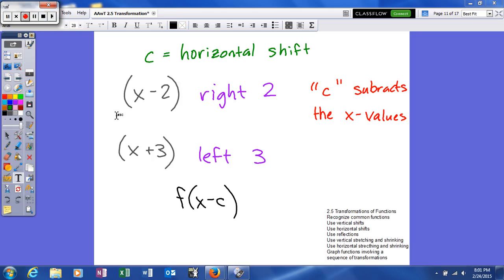So it'll look something like this. Now, I didn't write down what it was. It could be x minus 2 squared, or x minus 2 cubed, or the absolute value of x minus 2, or whatever it might be based on your parent function. But if it says x minus 2, it's always a little tricky. You're going to shift it right 2. And then here, it's going to be x plus 3, and we're actually going to shift it left 3.